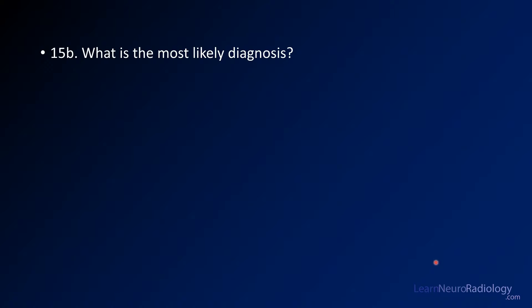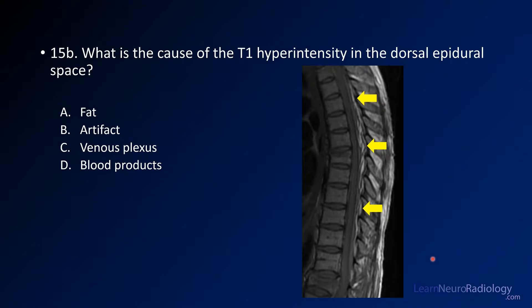Your first question is: what's the diagnosis here? Your second question is: what is causing the T1 hyperintensity along the dorsal epidural space? You have a couple of choices — is it fat, artifact, venous plexus, or blood products?